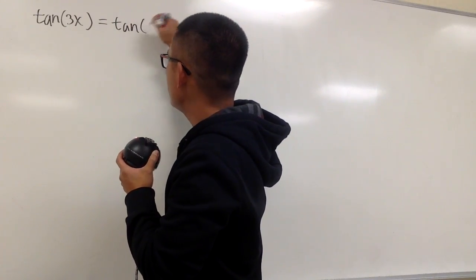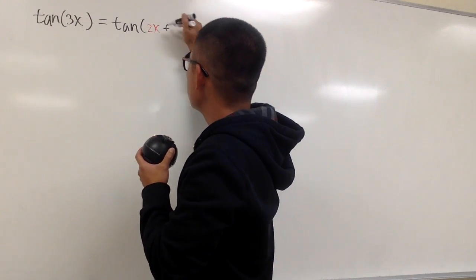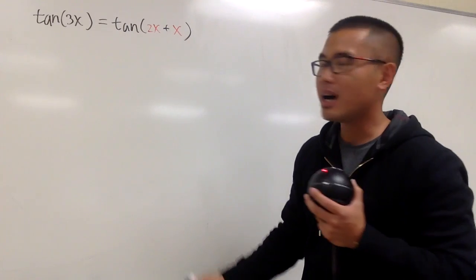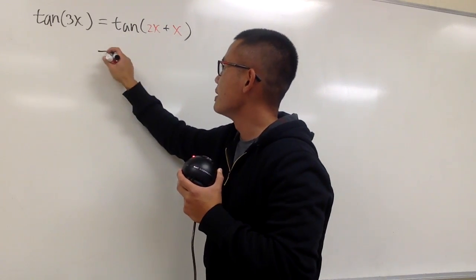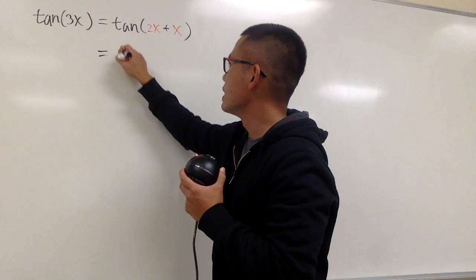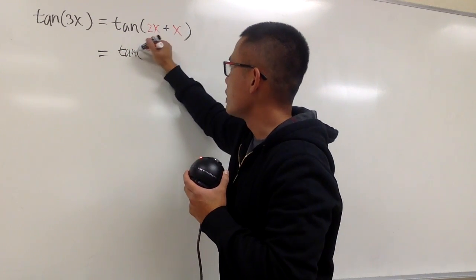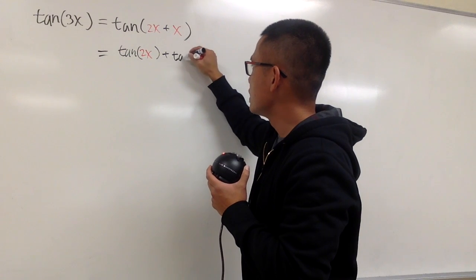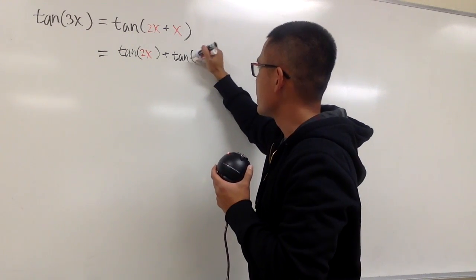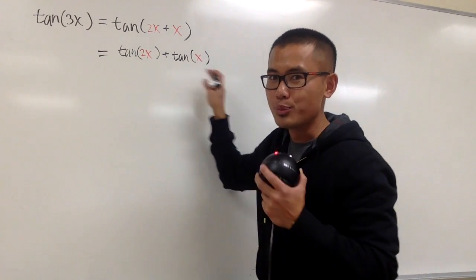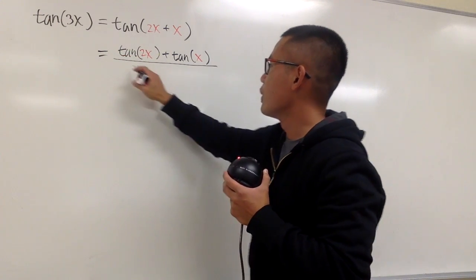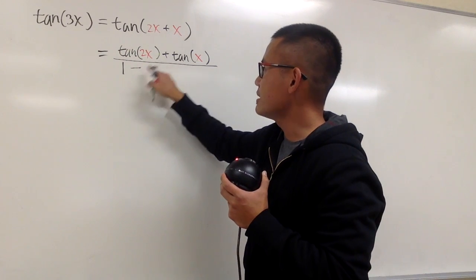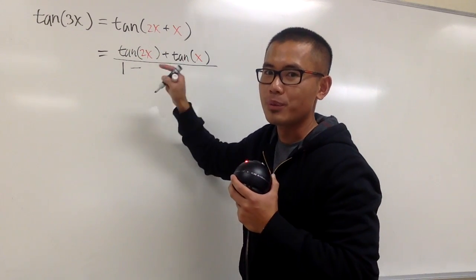This is the same as tangent of 2x plus x. And now we can use the angle sum formula for tangent. This is going to be tangent of the first angle, which is 2x, and then we add tangent of the second, which is x. This is just the numerator — we put this all over 1, and then minus on the bottom, because on the top is plus and on the bottom is minus for the angle sum formula for tangent.